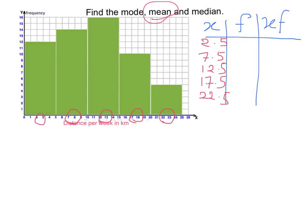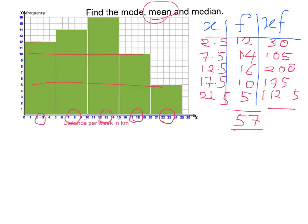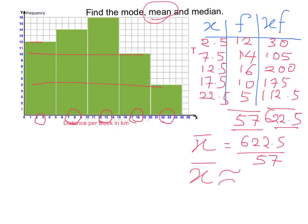And the frequency related to each group. The first group is 12. Next is 14, next is 16, and then 10, and then 5. And if you add up all the frequencies, you will get 57 as the total frequencies. 2.5 happens 12 times, so that product is 30. Next, the product 7.5 happens 14 times, so the product is 105. And the next product is 200, 175, 112.5, with a total of 622.5. So x bar, or the mean in this case, is 622.5 divided by 57. So x bar in this case is roughly 10.9 to 3 significant figures.